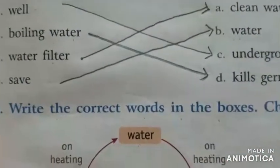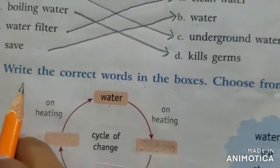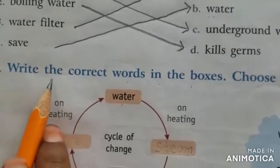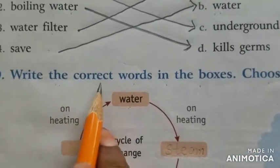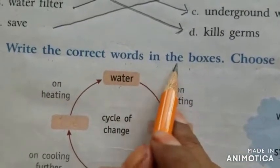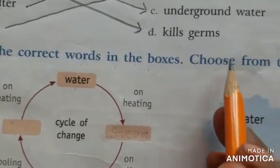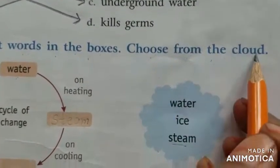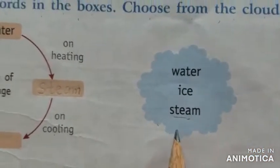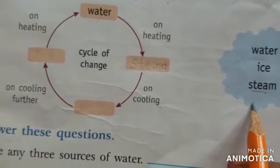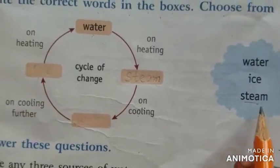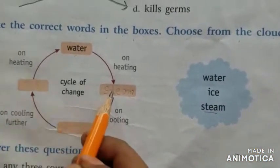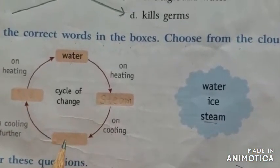First let us see about the D bit. What is the D bit? Write the correct words in the boxes. Choose from the cloud. From the clouds we have to choose the words and write them in the boxes.